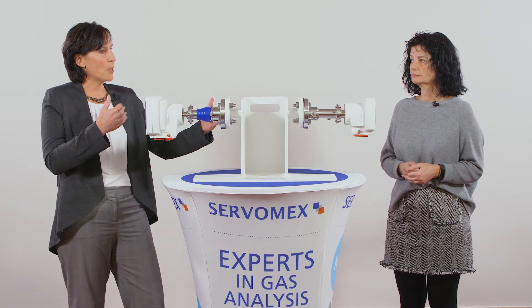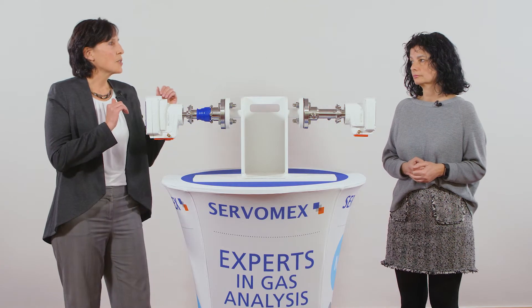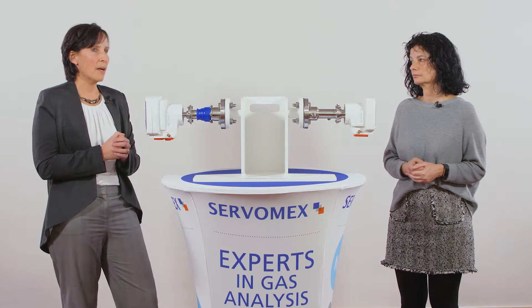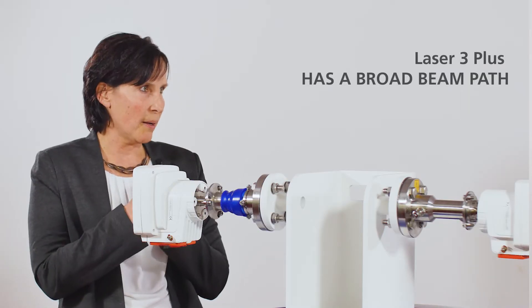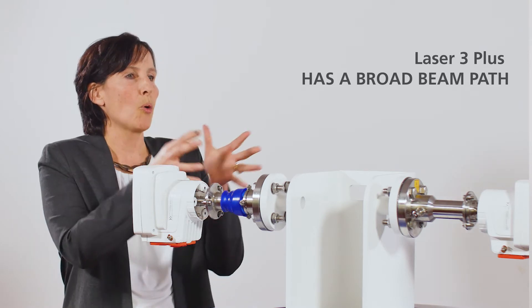So then that brings up the other issue: if I don't have a fixed pipe that locks one side to this side, now what do I do? One of the things that Servomex does is they actually have a beam path that's broader. So we take our laser beam and we broaden it out.